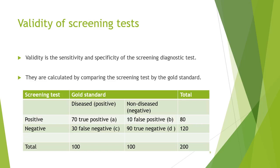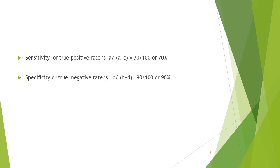In the four cells of the two-by-two table: the true positive is positive by both tests; the false negative is positive by the gold standard but negative by the screening test; the false positive is negative by gold standard but positive by the screening test; and the true negative is negative by both tests. Sensitivity is calculated by dividing A by A plus C, which equals 70%. Specificity is calculated by dividing D by B plus D, which equals 90%.